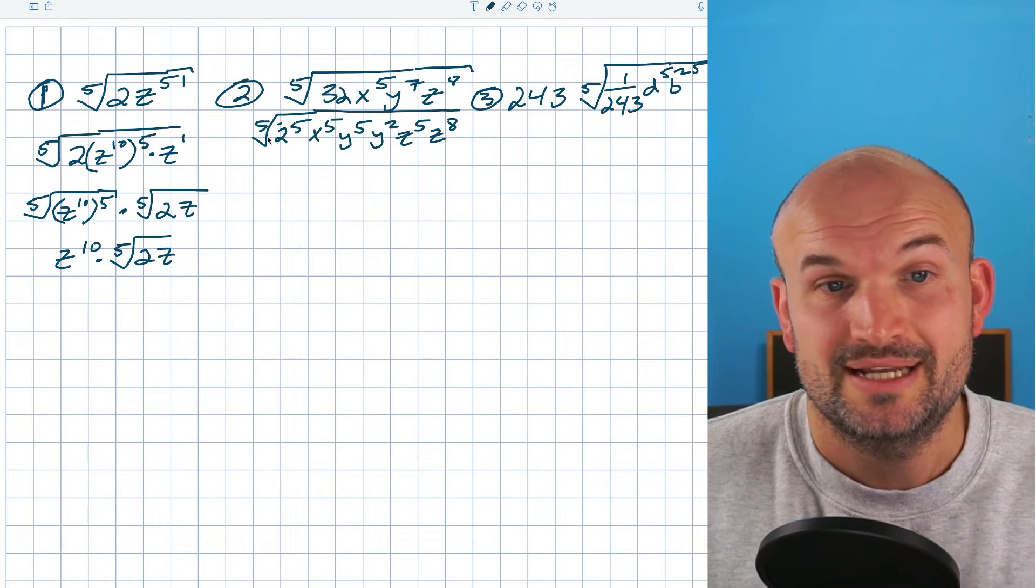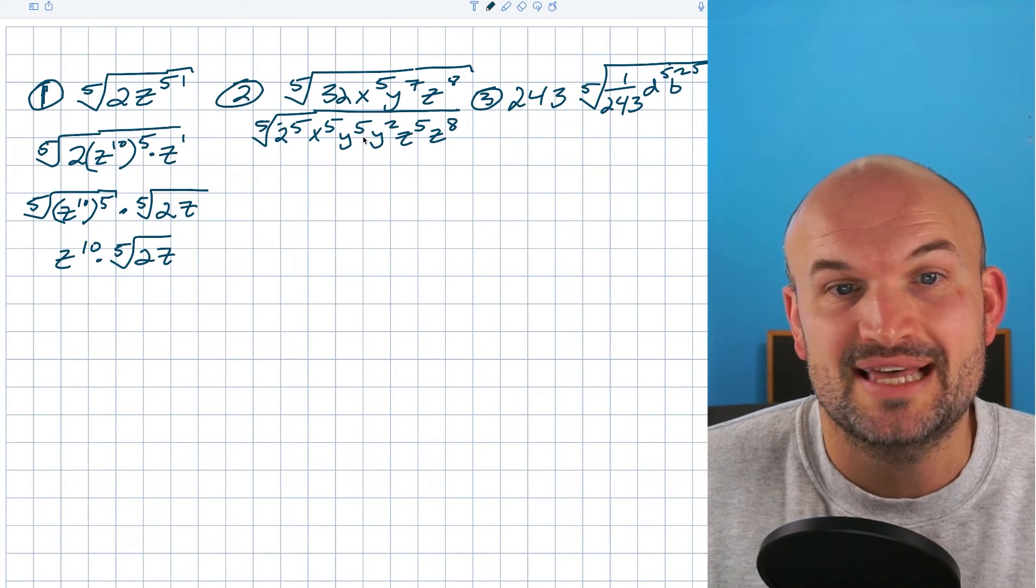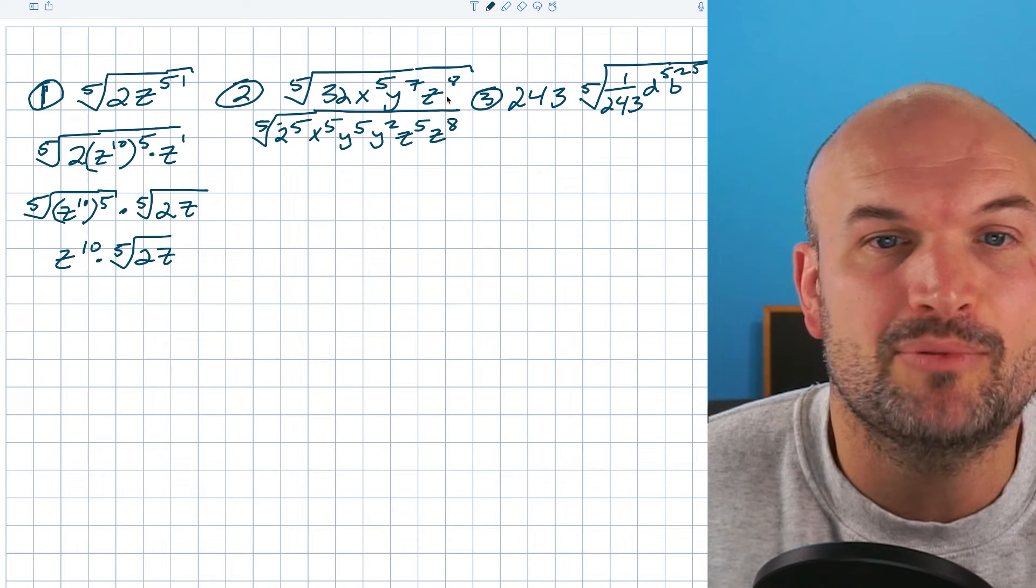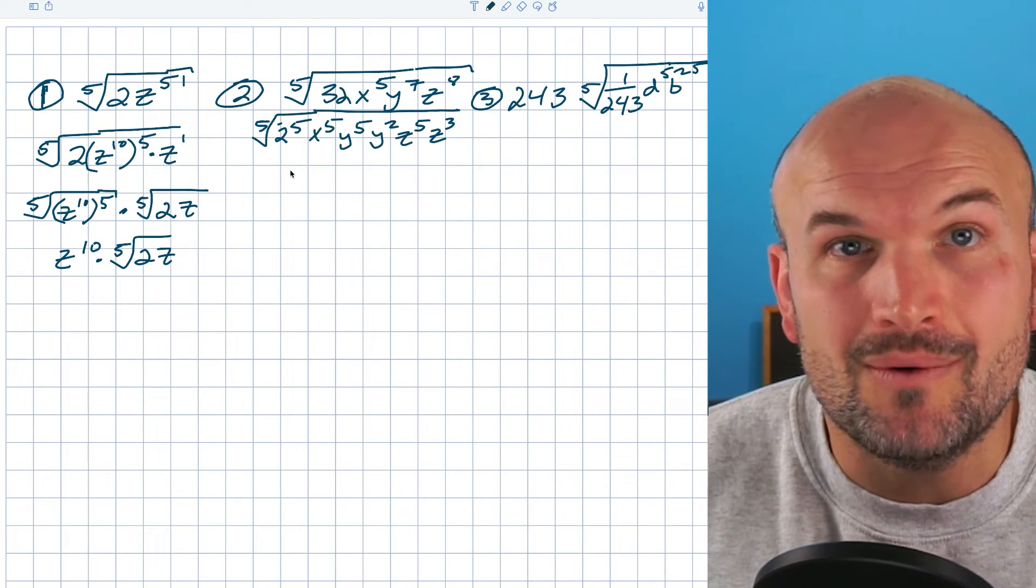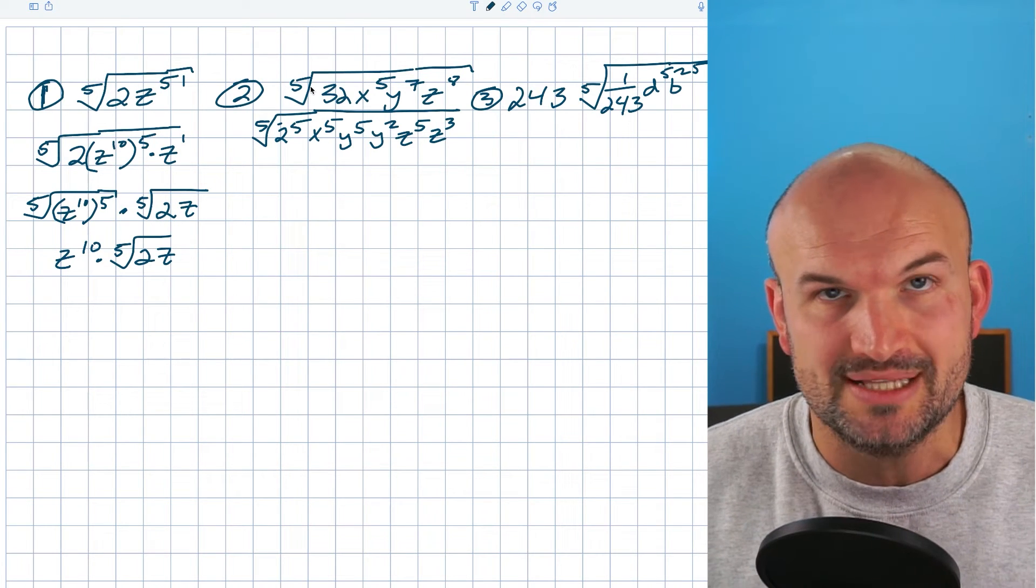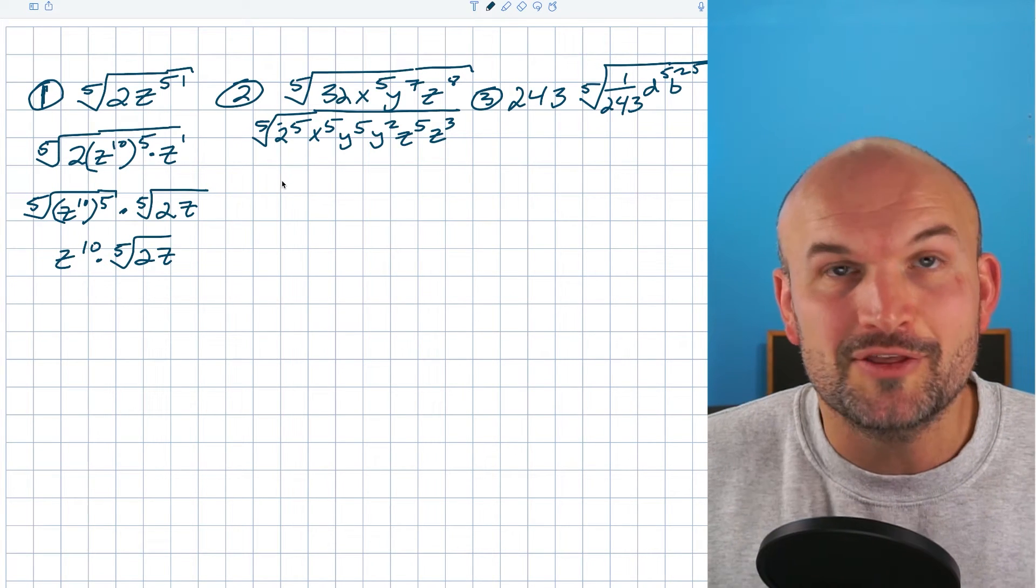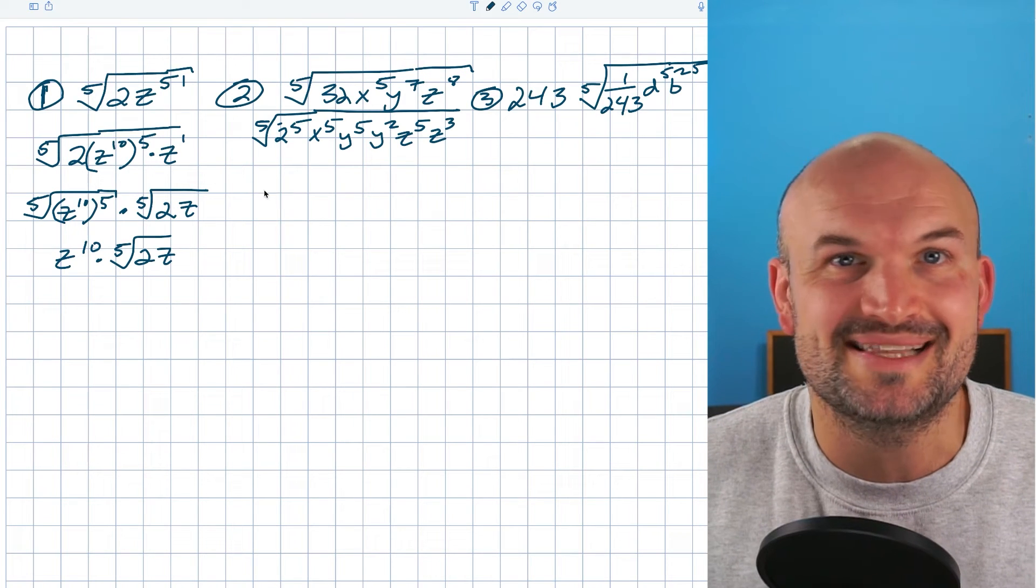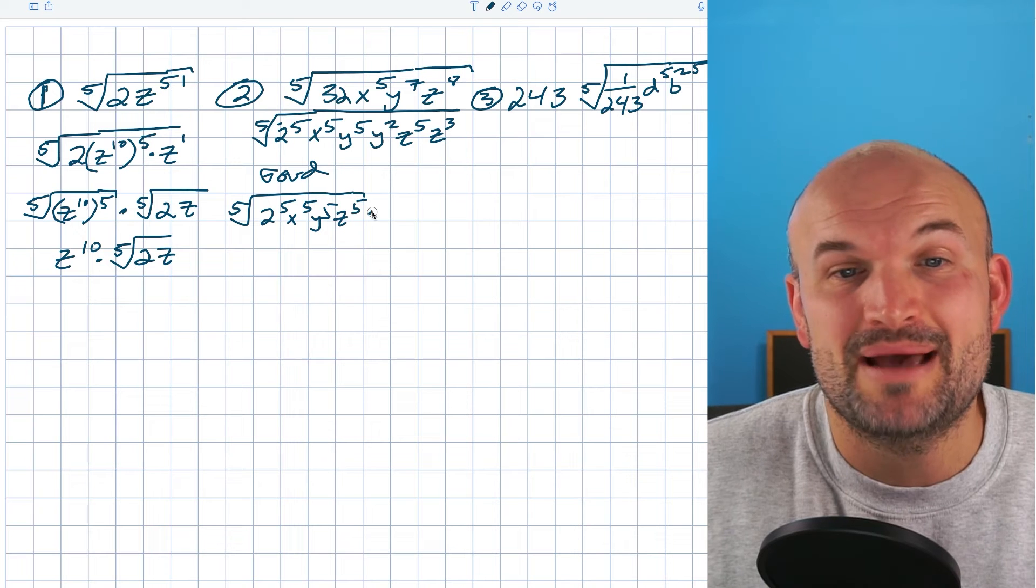So let's go ahead and rewrite this as everything I can raised to the fifth power. So now you can see what I did is I rewrote 32 as 2 to the fifth. I broke up y to the seventh as y to the fifth times y squared, because that equals y to the seventh. And then I broke up z to the eighth as z to the fifth times z to the third. So now, I can do it just like I did in my last example. I can separate these. I could break these all up in their own individual radical. But what I'm going to do is I'm going to break these up into the good and the bad. The good are going to be the ones that are already raised to the fifth power, and the bad are the ones that cannot be simplified.